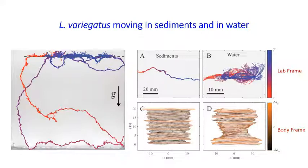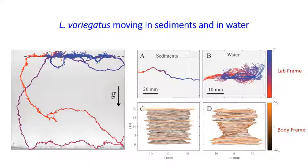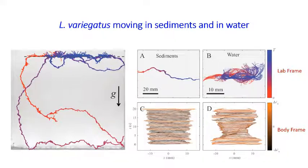When you zoom into one particular region and examine what is happening as the worm moves through the sediments — which are transparent, so you can only see the worm's track — you observe that the worm, as it moves forward, follows a narrow path and essentially follows its own body as it burrows. By contrast, when the worm is above the sediments in the water, it appears to flop around and move a lot more freely.